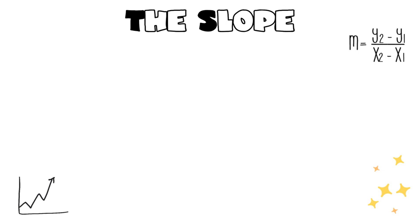In the previous example, we calculated the rise and run easily because we were given nice whole numbers. But realistically that's not always going to be the case — we can have messy fractions or decimals. We need to find a more efficient way of calculating the slope that works every single time, and the way we're going to use is an algebraic method. We're going to come up with a formula we can apply every single time.